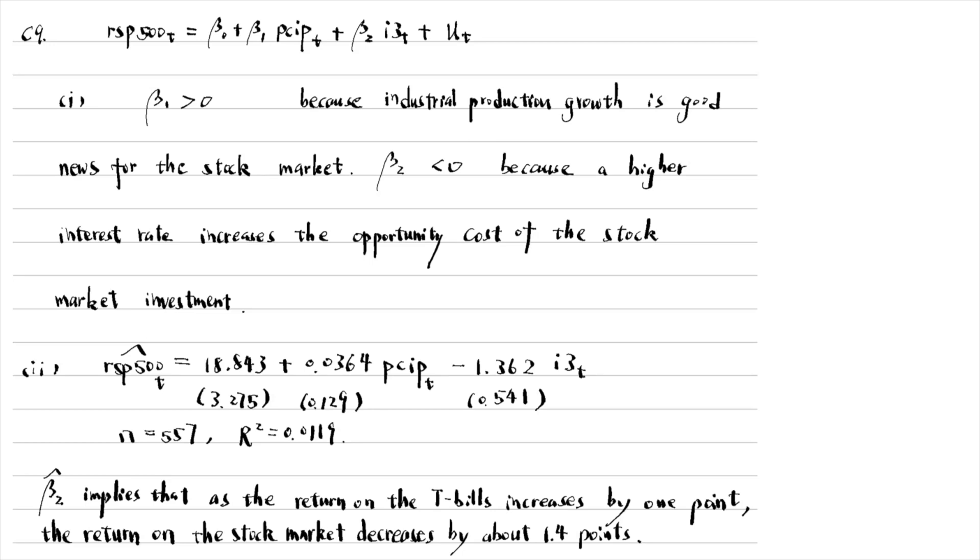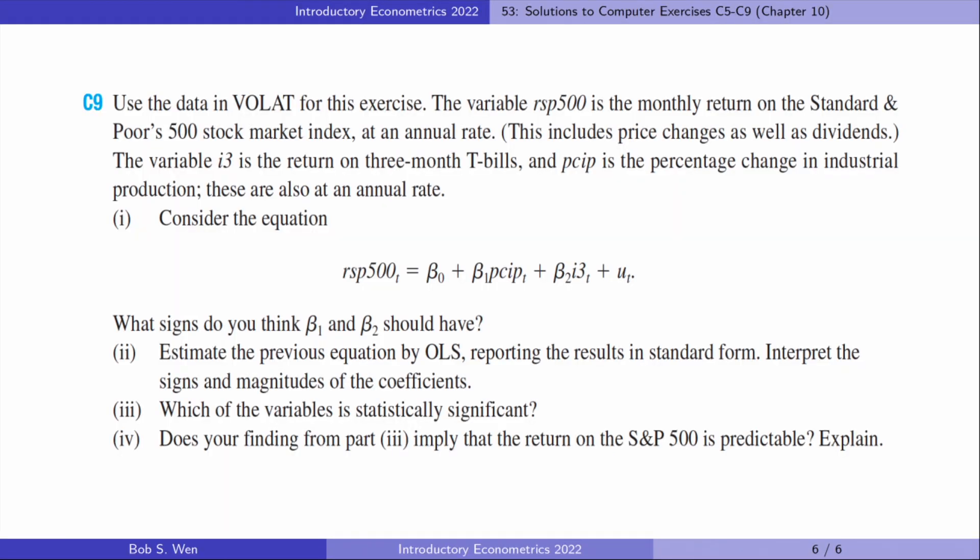For the third part, only the interest rate is statistically significant. For the last part, we use the contemporaneous data on the outcome variable and the explanatory variables in the model. There is nothing to do with prediction. To test whether the return on the stock market is predictable by the return on the 3-month t-bills, we should regress the former in time t on the latter in time t-1.